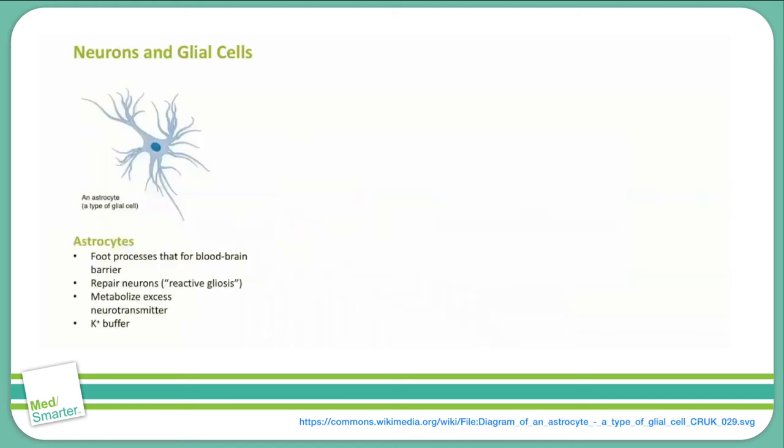Starting with astrocytes. Here's an example of an astrocyte in our image here. It has these foot processes that look almost like the dendrites of an axon. Astrocytes are very versatile cells within the CNS. The foot processes of astrocytes are what make up the blood-brain barrier.